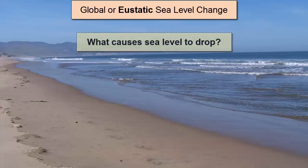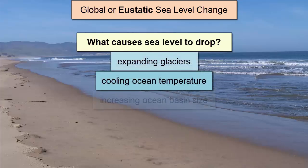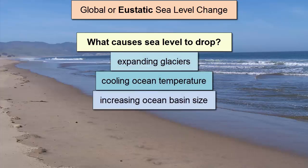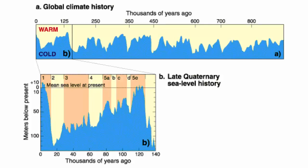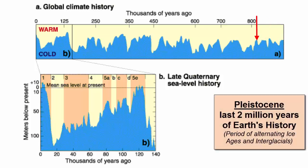The reverse of the causes of sea level rise — expanding glaciers, cooling ocean temperatures, and increasing the size of ocean basins — causes sea level to drop. This graph shows how sea level has changed over the past 800,000 years of Earth's history, with data drawn from seafloor sediment and ice cores. Sea level has fluctuated consistently during this period known as the Pleistocene, which began two million years ago and is marked by a rapid drop in Earth's temperature and subsequent oscillation in and out of ice ages.